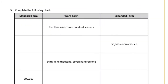Number three: complete the following chart. So we're going to write all of these in standard, word, and expanded form. The word form says five thousand three hundred seventy. Let's write that in standard form: 5,370. And then in expanded form we would have five thousand plus three hundred plus seventy. We can leave off the ones place because it's just zero.